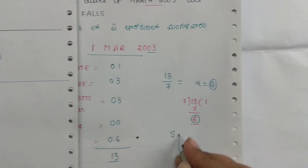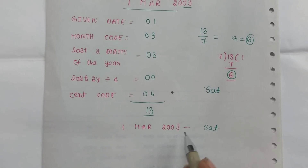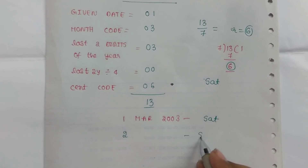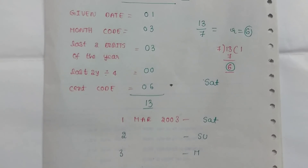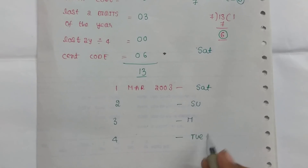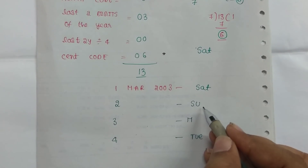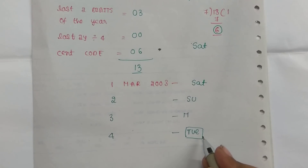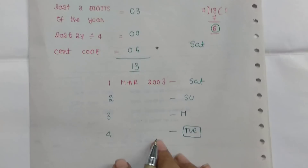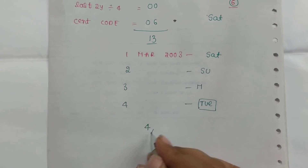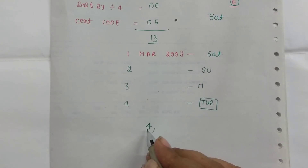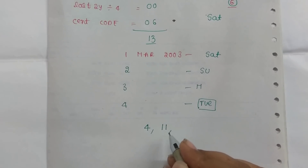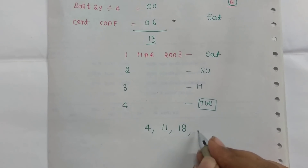So March 1 is the same. March 1, 3 is the same. March 4th: from March 4th, add 7 to get the next Tuesday. So 4 plus 7 gives 11, then 11 plus 7 gives 18, then 18 plus 7 gives 25. So the Tuesdays in March are 4, 11, 18, and 25.